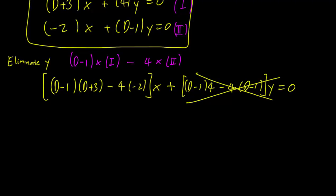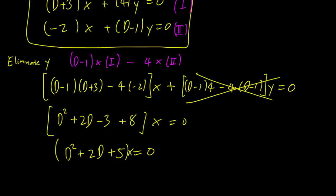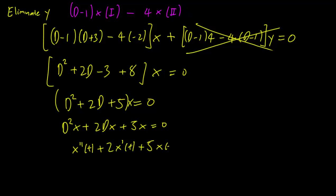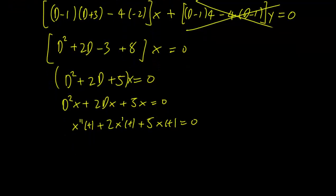What's left to do is to multiply out this term. We can treat D as if it were a variable in a polynomial. So we end up with D² + 2D - 3 + 8 times x = 0, or (D² + 2D + 5)x = 0. We can switch back to using the prime notation. This is going to be x''(t) + 2x'(t) + 5x(t) = 0. And we have successfully achieved a differential equation with just one variable.